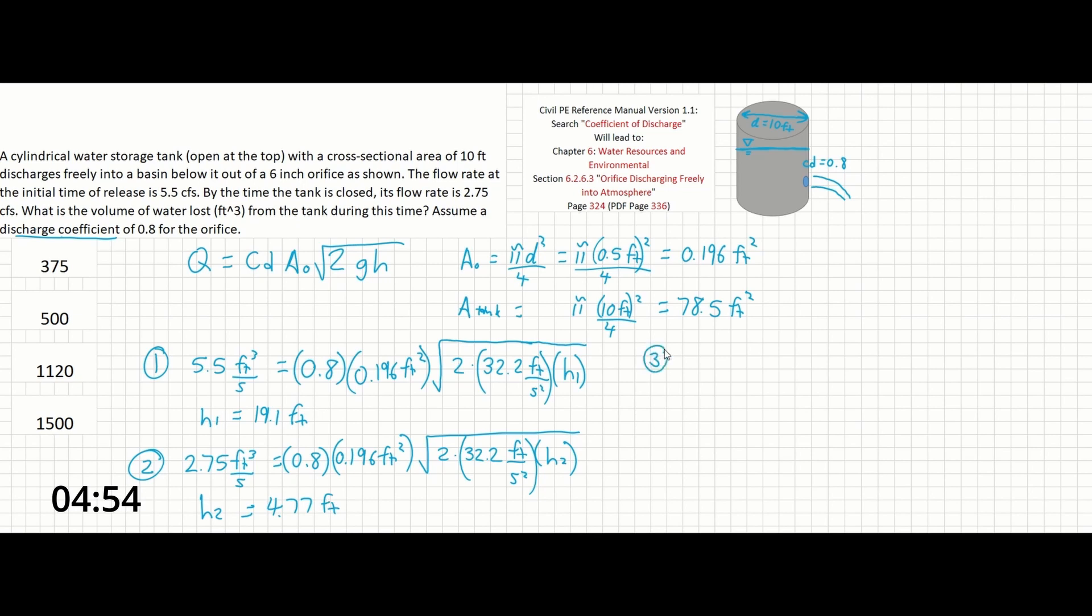So our third step here would simply be finding the difference of those two heights. So H1 minus H2 equals 19.1 feet minus 4.77 feet, and that's going to give us 14.33 feet. So that would be the depth over which the water in the tank dropped over the period of time that the water was flowing.